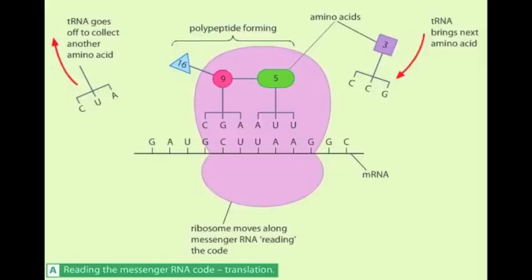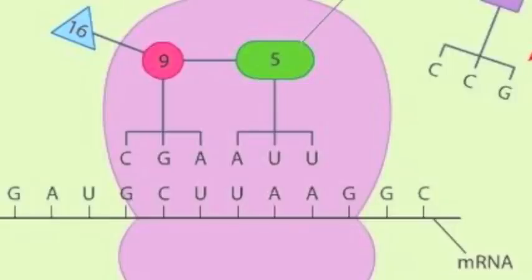At the other end of the tRNA is a place where the amino acid attaches. The triplet of bases on the tRNA matches a triplet on the mRNA following the base pairing rules. The first amino acid is now held in a fixed place by the tRNA, ready to start the chain.